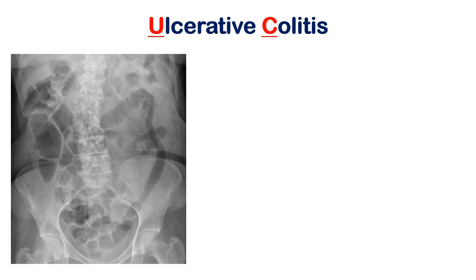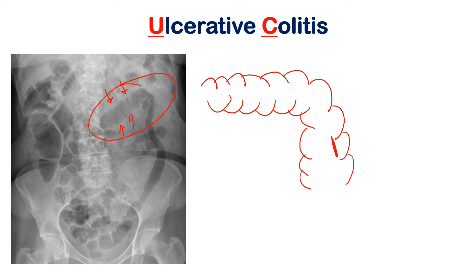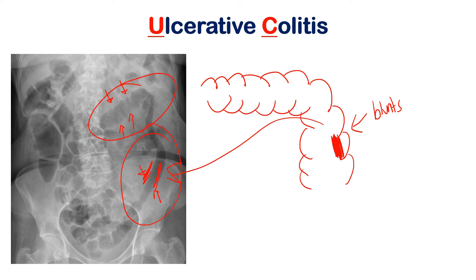This is what's called a lead pipe appearance on X-ray. Notice the transverse part of the colon has these little ridges all along it — those are called the haustra, the normal invaginated wrinkled areas of the large intestine. What happens in ulcerative colitis is that the ulceration of the two inner layers blunts these haustra. So what you end up getting on X-ray in the damaged area is a completely flat appearance — no haustra — and that's called the lead pipe image.